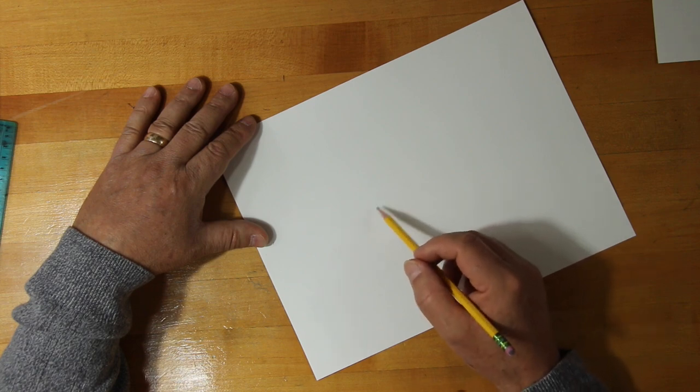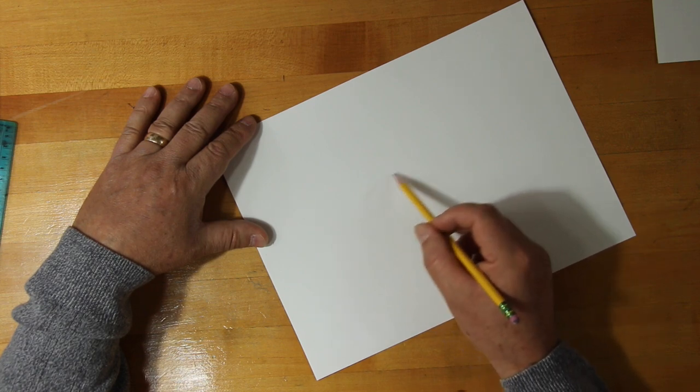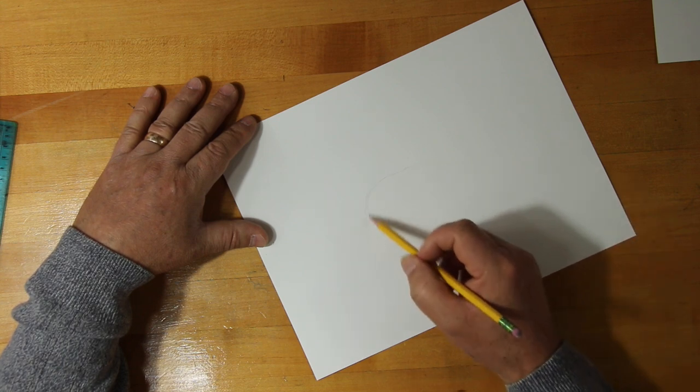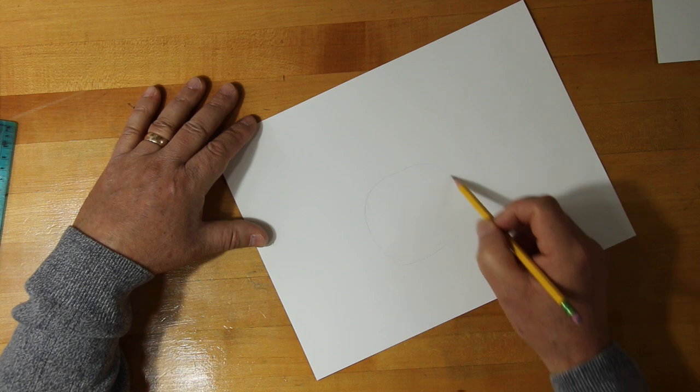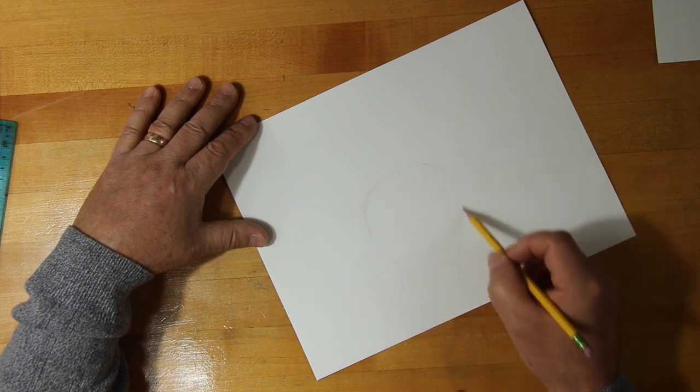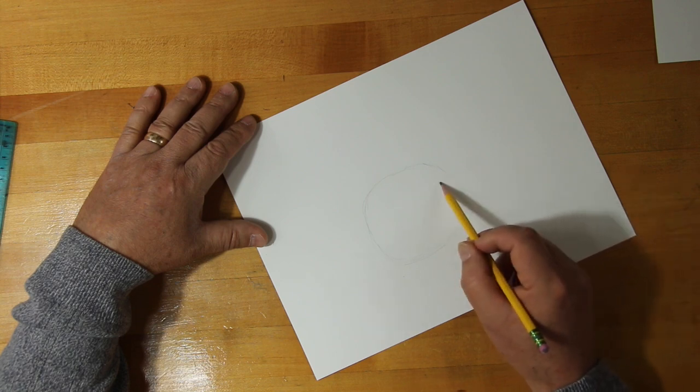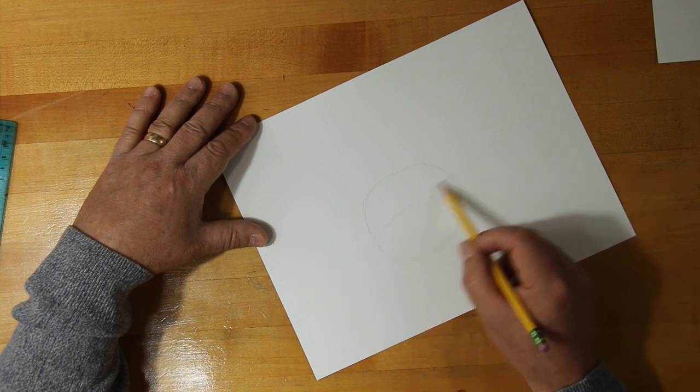Now we're gonna make the face relatively small because he's got a big sombrero, so we got to make sure that we leave space for that. So I'm gonna start off with a simple little circle and I want to establish where I want his eyes to be.